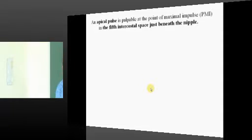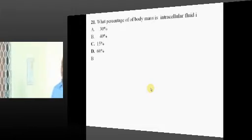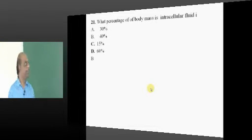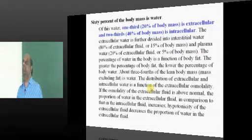Now it is the fifth intercostal space. What percentage is intracellular fluid? It is basically 40% of the body mass.